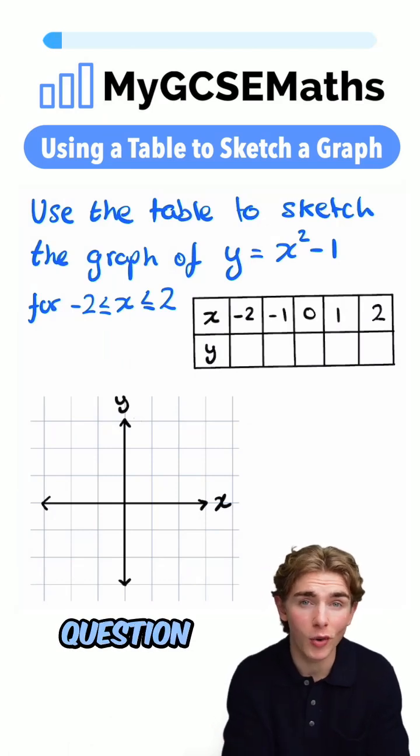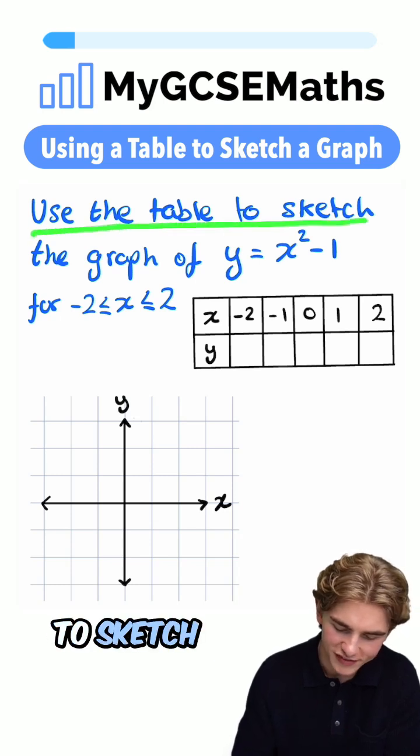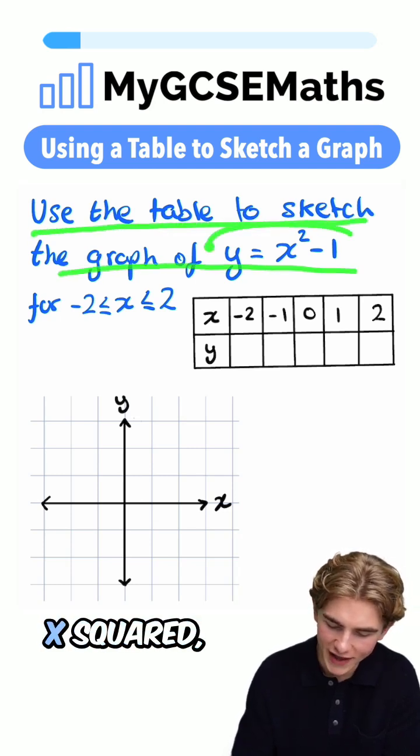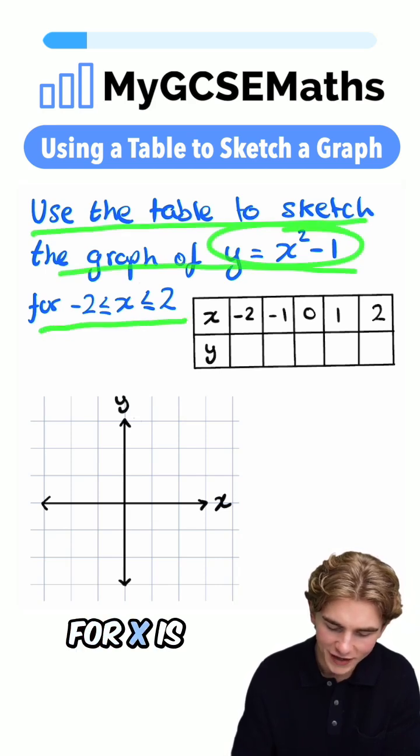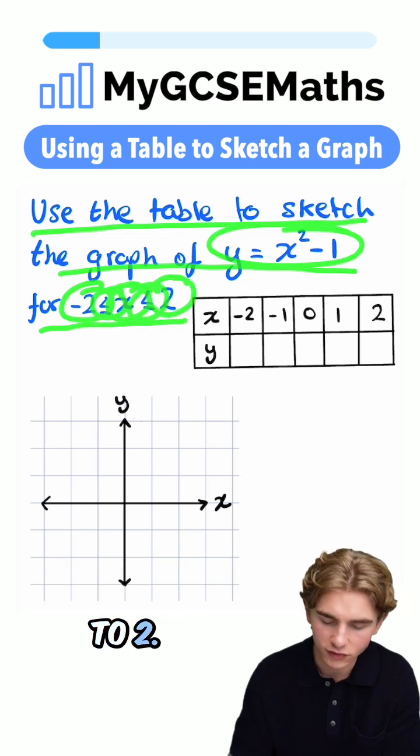This is a super common question in calculator papers, so let's have a look. It says, use the table to sketch the graph of y equals x squared minus one for x is greater than or equal to negative two and less than or equal to two.